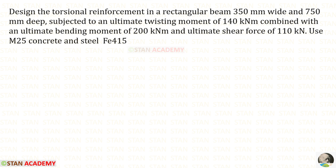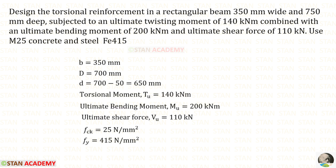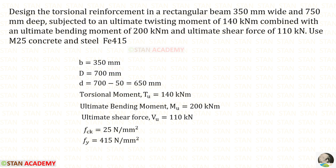Hello everyone. Today we are going to design a beam for torsion. Let us read the question and write the given data. Design the torsional reinforcement in a rectangular beam 350 millimeter wide and 750 millimeter deep. The overall depth D is given as 700 millimeter. Let us assume that the effective cover d-dash is 50 millimeter.